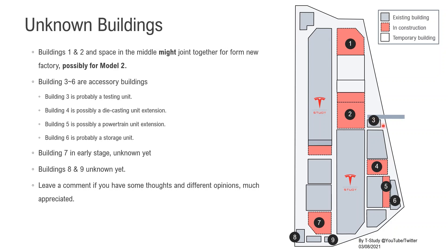Building three and six are accessory buildings. Building three is probably a testing unit — it would test vehicles under extreme conditions like temperature, vibration, fatigue, stress, etc. Building four is under construction and is a possible die casting unit extension, as it sits adjacent to the existing die casting unit. Building five is at the back of powertrain unit two, so it's likely a powertrain unit extension. Building six is probably a storage unit. Building seven is in an early stage — we don't know its purpose yet. Buildings eight and nine are also unknown, but possibly part of the utility unit.